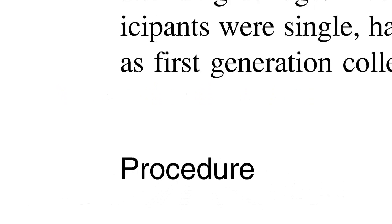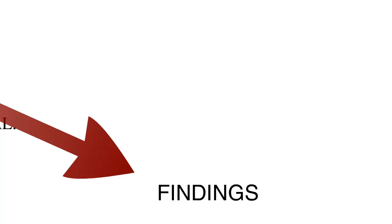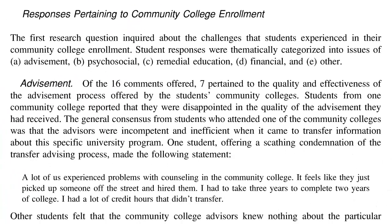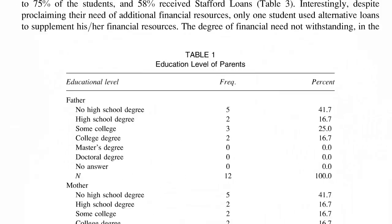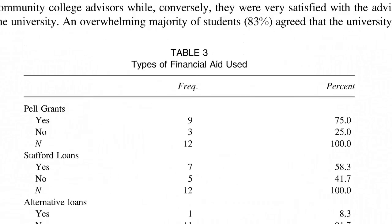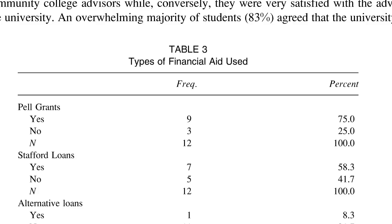The findings or results will be the most statistical part of the article, including charts and graphs when necessary to illustrate what the researchers discovered. This section may be highly technical, but try to understand the information that is being conveyed through the charts and graphs.